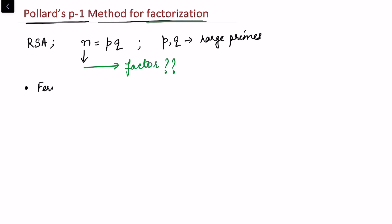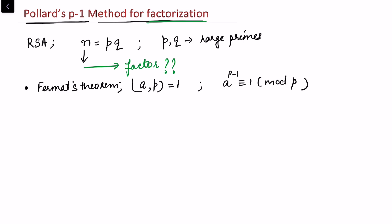I want to recall Fermat's theorem. In Fermat's theorem, if we choose a number a whose gcd with p is equal to 1, then a raised to the power p-1 is congruent to 1 mod p. This method — Pollard's p-1 method — is also sometimes called the Monte Carlo method, and we work with this p-1 which appears in the exponent.